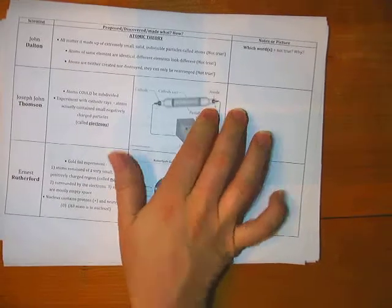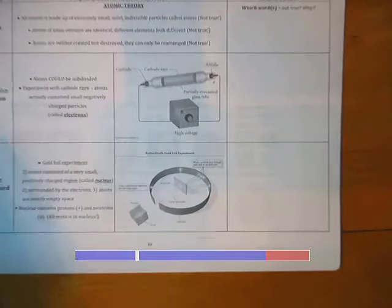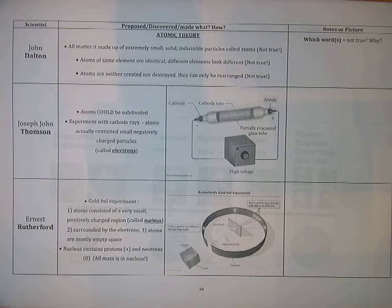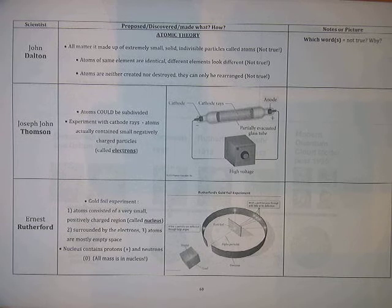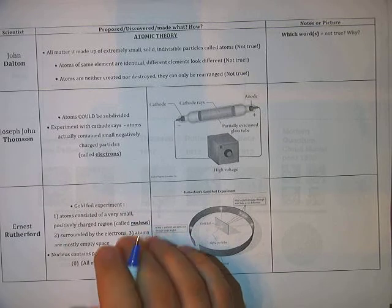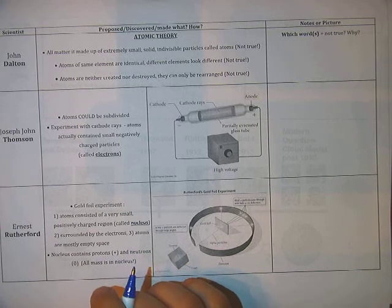Let's talk about page 60. The foldable activity you just did sort of walked you through a whole bunch of information about the historical understanding of the structure of the atom. It talked about a bunch of different philosophers, thinkers, and eventually scientists, and a lot of their experiments. We're going to focus on four of those scientists — the foldable gives you an overview, and we'll focus on just four of those guys for quizzes and tests.